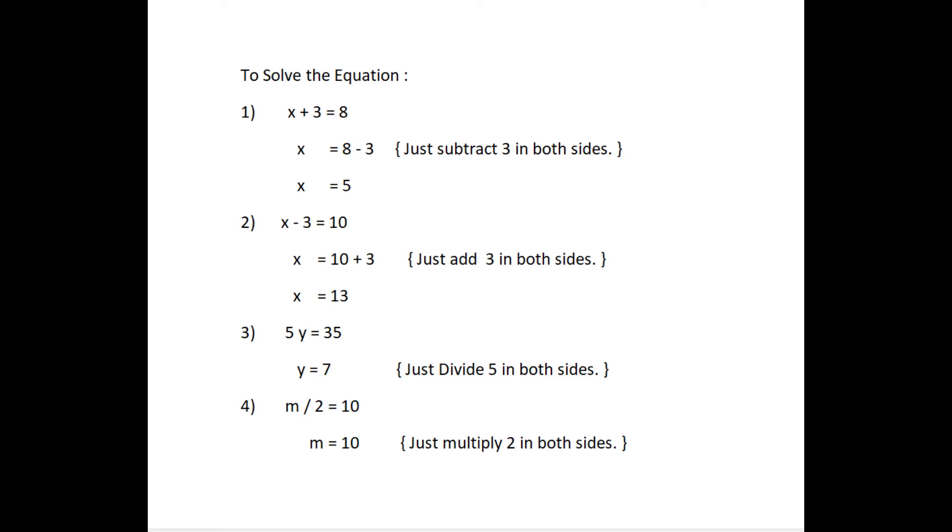Then, another one example. 5y equal to 35. Then, the value of y equal to 7. Here, just divide 5 in both sides. m divided by 2 equal to 5. Then, the value of m equal to 10. Here, just multiply the 2 in both sides.